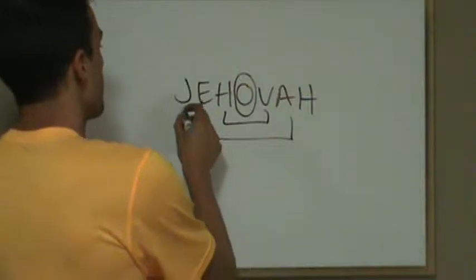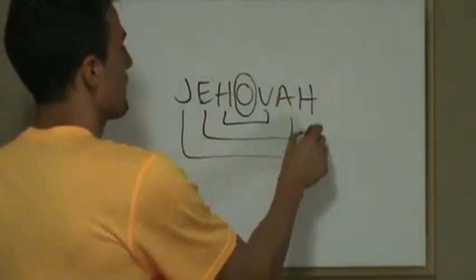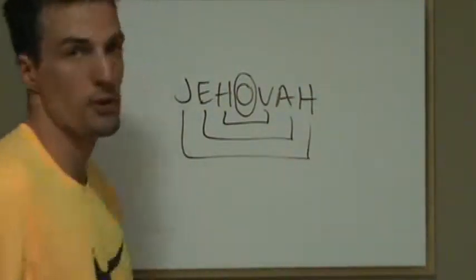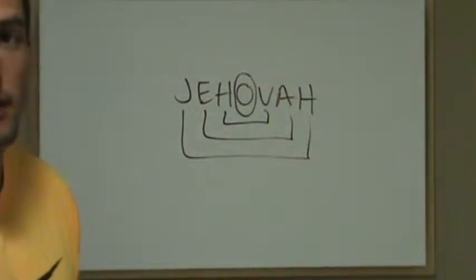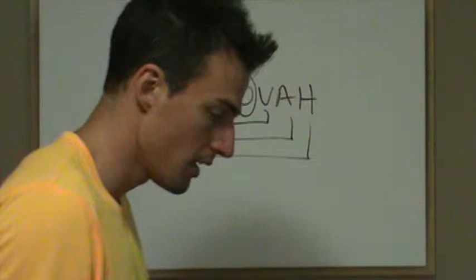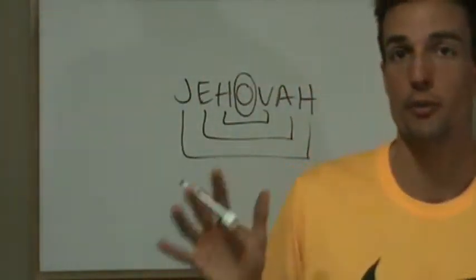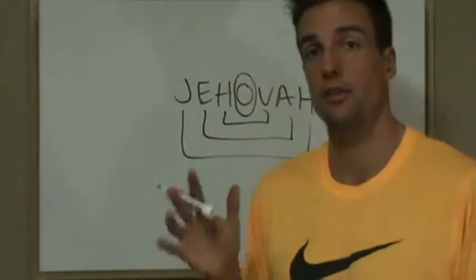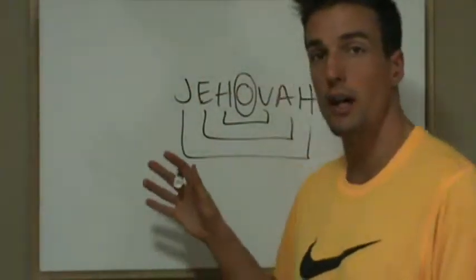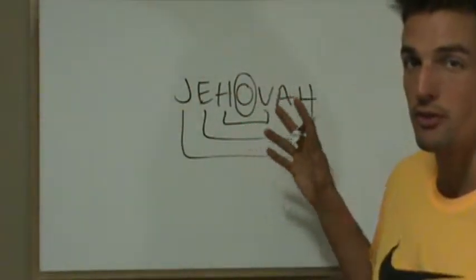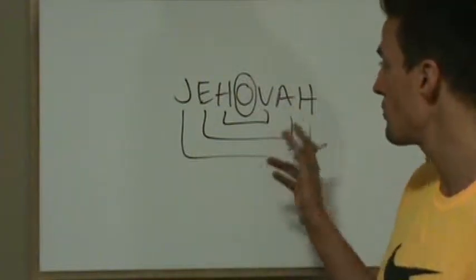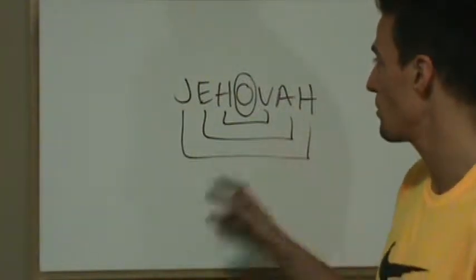And then the J and the H, the bookends, knit together to make 18, which is a multiple of 3. Why? Because God is sovereign and God is three persons. Jehovah God is three persons: God the Father, Jesus Christ the Son, and the Holy Ghost.